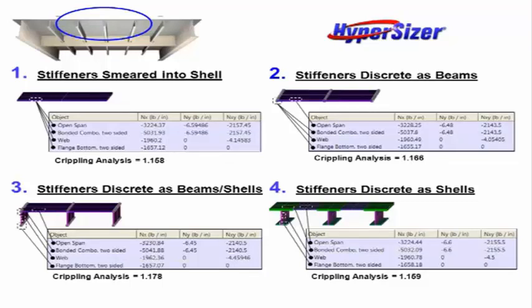Regardless of which modeling technique is used, HyperSizer extracts loads from the FEA solution consistently and accurately. Once object loads are established, they are used for the exact same HyperSizer analysis methods, including strength, local buckling, and crippling.